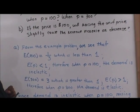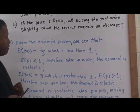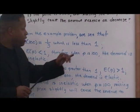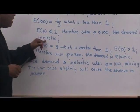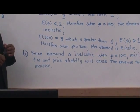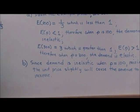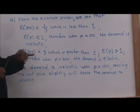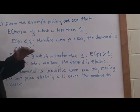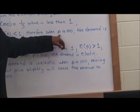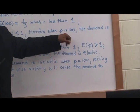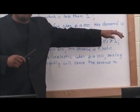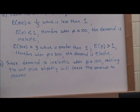When E of P is less than one, we can conclude that when P is 100, the demand is inelastic. So E of P equals one-third at P equals 100, which is less than one — meaning the demand is inelastic.